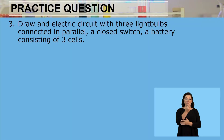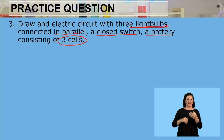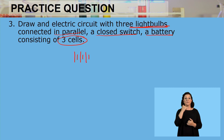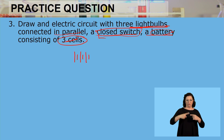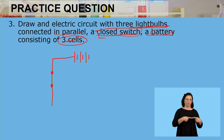Question three: we now need to draw an electric circuit with three light bulbs connected in parallel, and we also need to have a closed switch, and lastly a battery that consists of three cells. Remember if it's one cell that's a cell symbol, two makes a battery, and three cells also constitutes a battery. There must also be a switch — we are not told where the switch is supposed to be, so the switch can be anywhere on the wires. I will draw my switch here, and the switch is supposed to be closed.